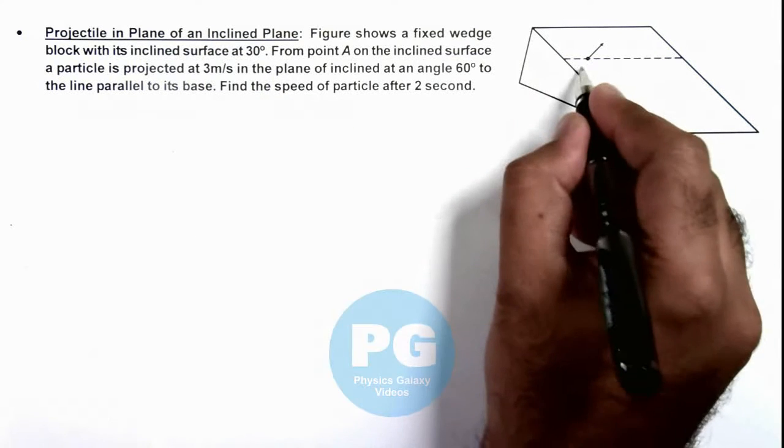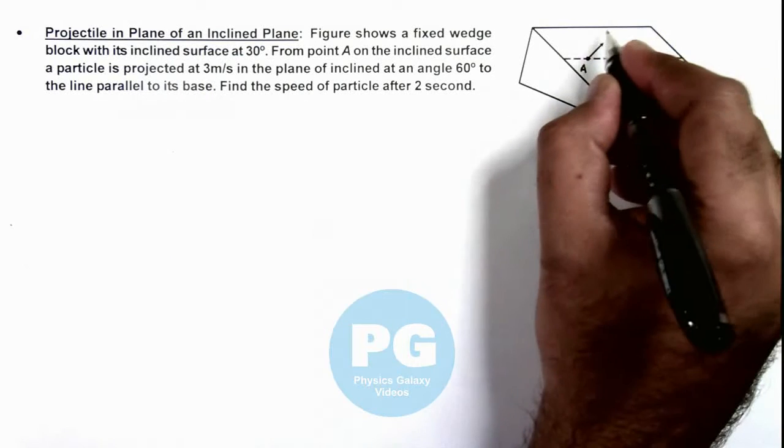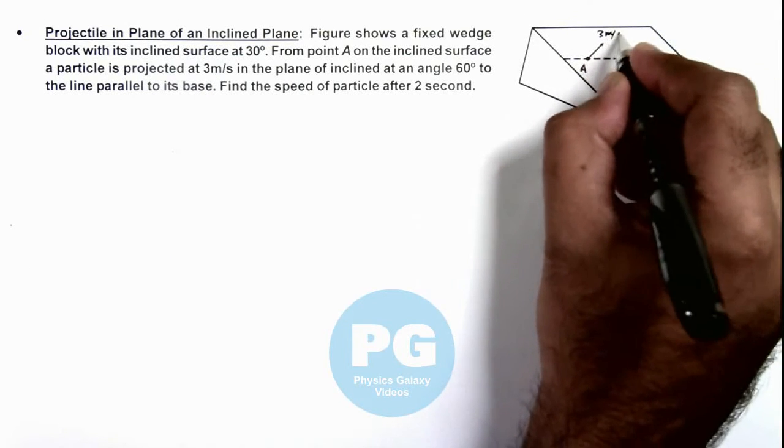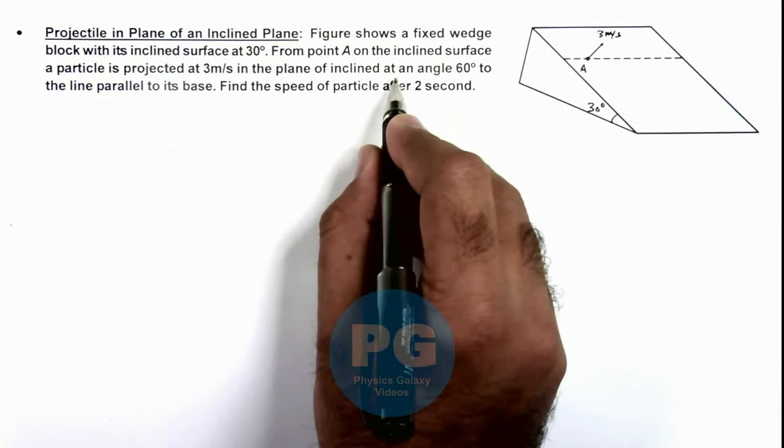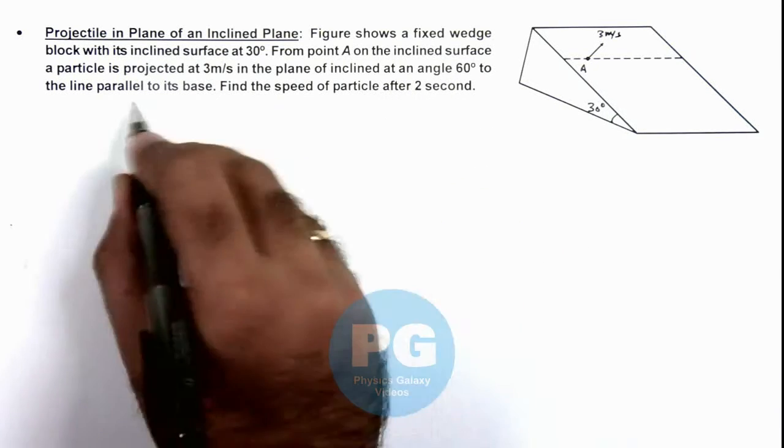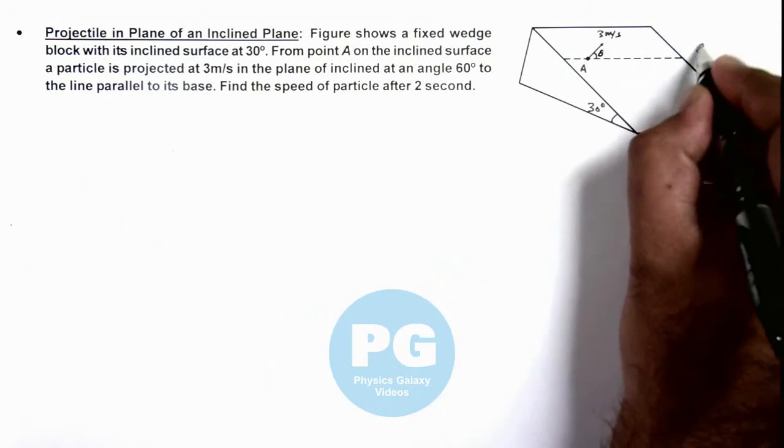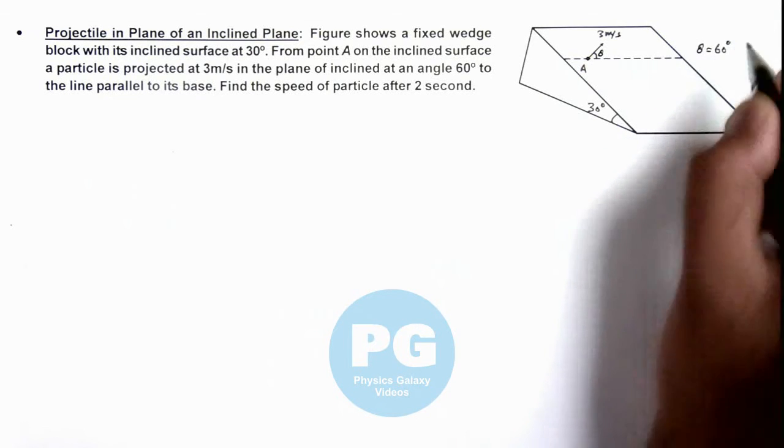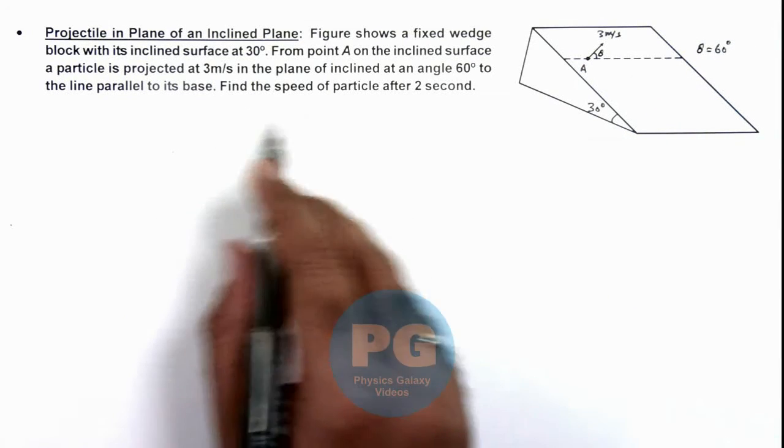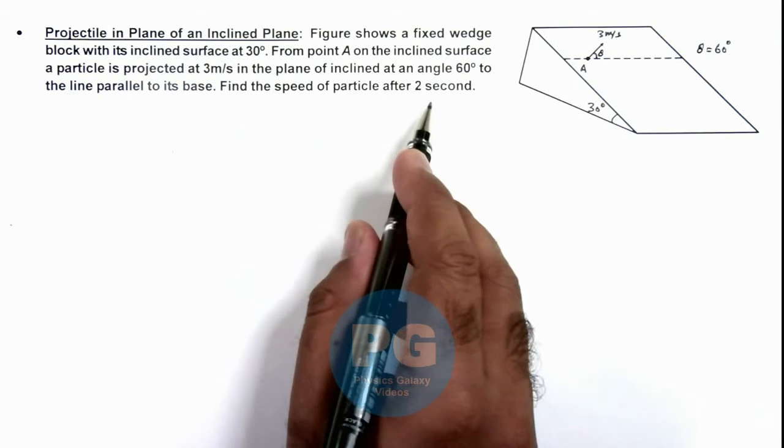From point A on the inclined surface, a particle is projected at 3 meters per second in the plane of inclined at an angle 60 degrees to the line parallel to the base. This angle is theta, where we are given that theta is 60 degrees. We are required to find the speed of particle after 2 seconds.